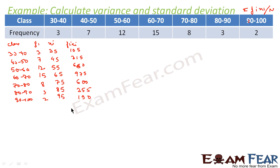We need to find sigma fi xi. Adding these values: 105 plus 315 plus 660 plus 975 plus 600 plus 255 plus 190 equals 3100. Now we add the frequencies: 3 plus 7 plus 12 plus 15 plus 8 plus 3 plus 2 equals 50, so n is 50.